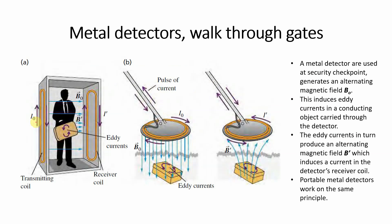Metal detectors اور walkthrough gates میں بھی eddy current use ہوتا ہے — at security checkpoints generating an alternating magnetic field B₀۔ Walkthrough gate کے دو coils ہیں: ایک transmitting coil اور دوسرا receiving coil۔ Transmitting coil کے اندر alternating magnetic field B₀ produce ہو رہا ہے۔ Right hand rule سے ہم find کر سکتے ہیں کہ magnetic field transmitting coil سے receiving coil کی طرف horizontal setup ہوتا ہے۔